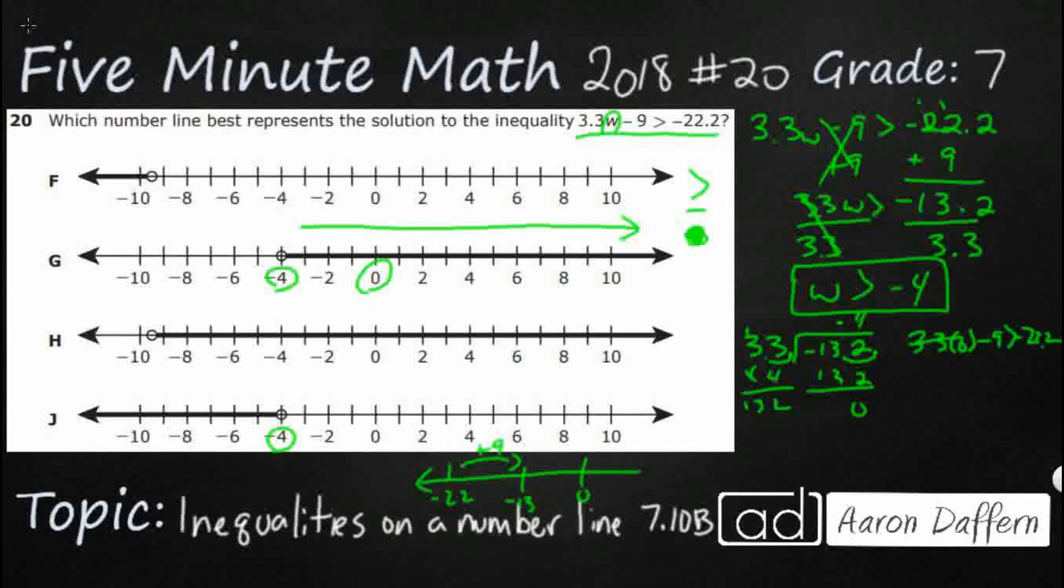So I'm going to do 3.3 times zero minus nine greater than negative 22.2. Well, that is obviously just zero. So negative nine is greater than negative 22.2, which you have to get with a negative. So here's my negative nine, right? My negative nine would be here. My negative 22 would be way over here. So that does check out.